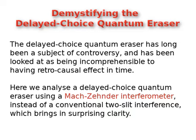Here we analyze a delayed-choice quantum eraser using a Mach-Zehnder interferometer, instead of a conventional two-slit interference, which brings in surprising clarity.